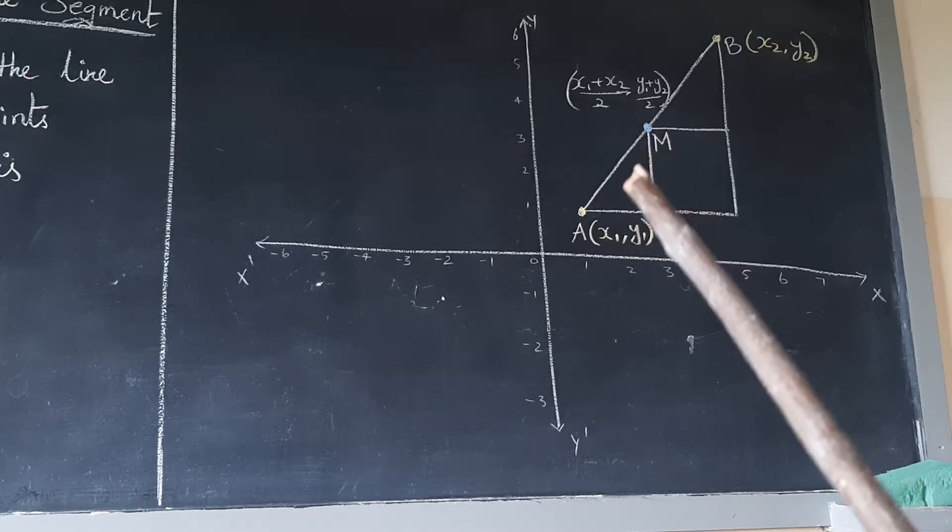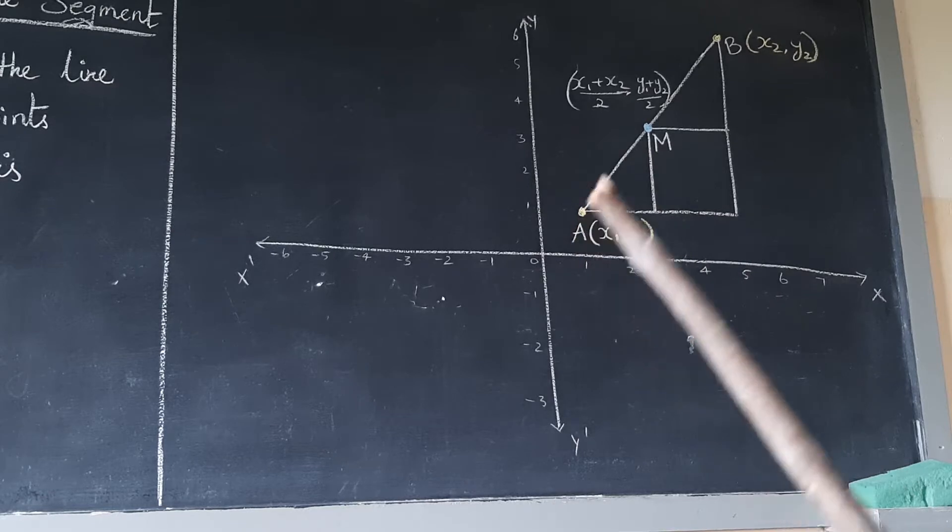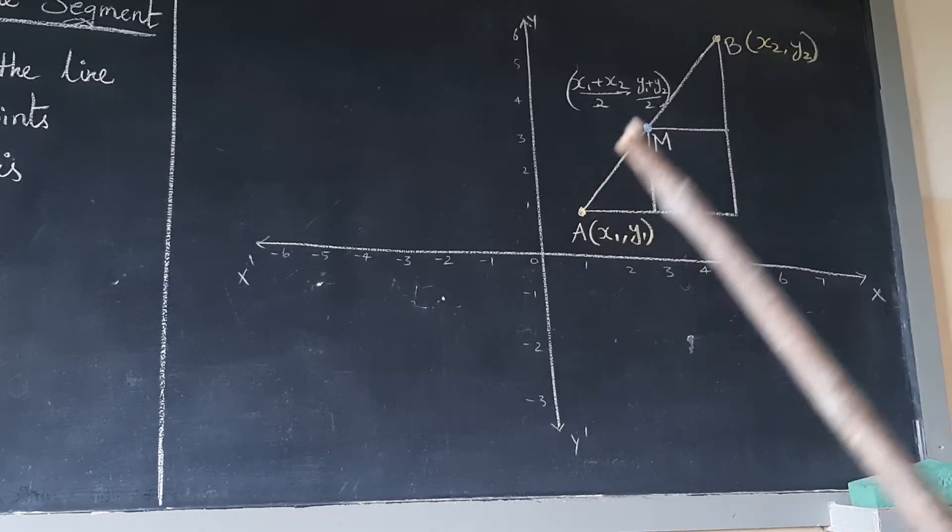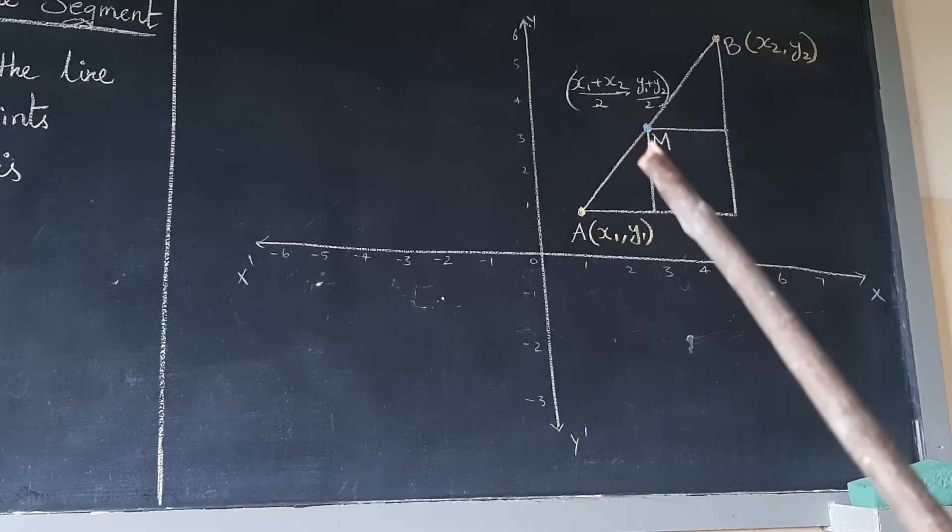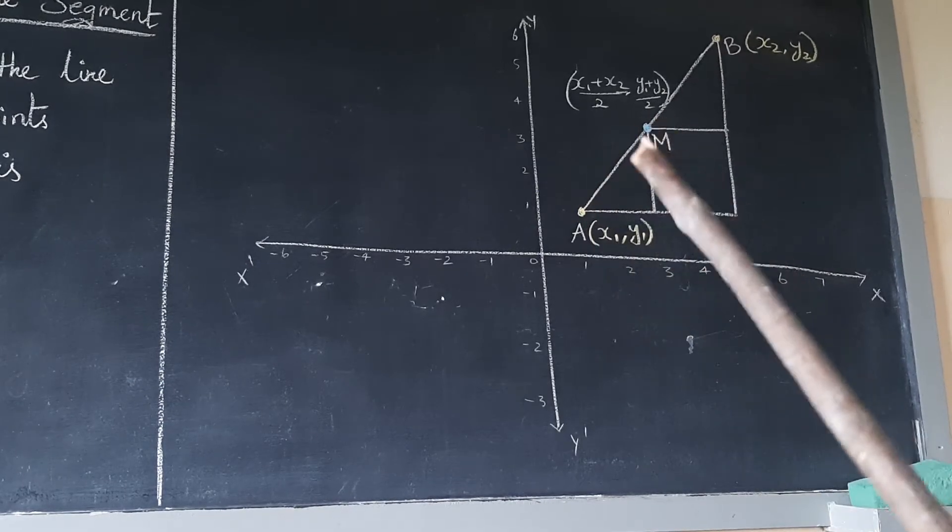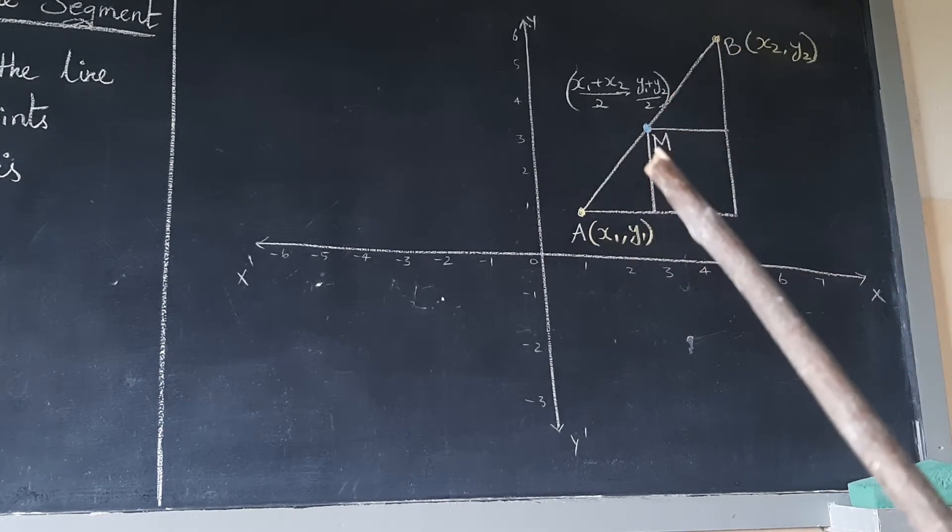Village A, village B. This is the middle or midpoint, equal distance. M is the midpoint.